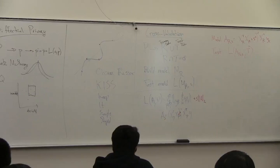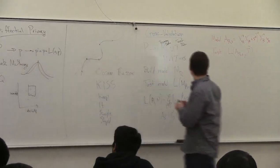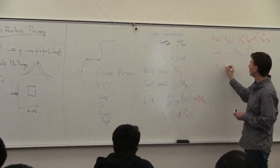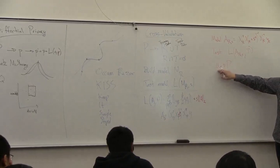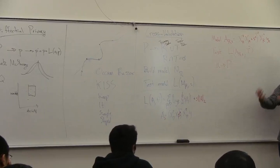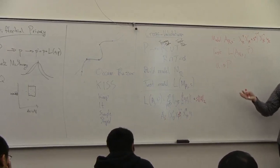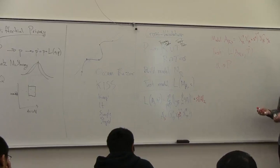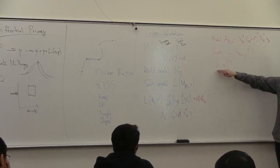The whole idea goes back to this model where you have this process mu which is creating your data set P. You want to think your data is coming from mu; you want to evaluate how well it does if you got more data from mu that you haven't gotten. Your goal is not to do well on the existing data — you already know the answer to that. Your goal is to build a function which does well on other data from mu you haven't gotten, like the part of Twitter not in your 1%.